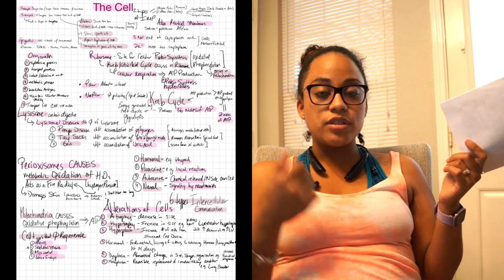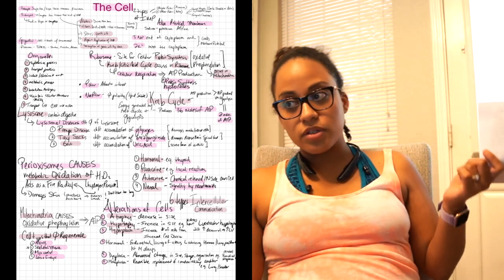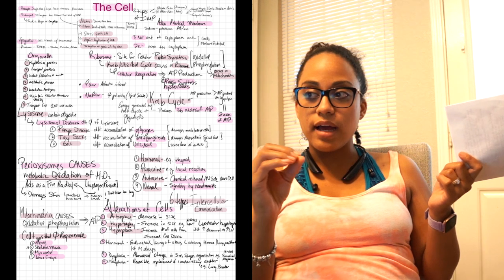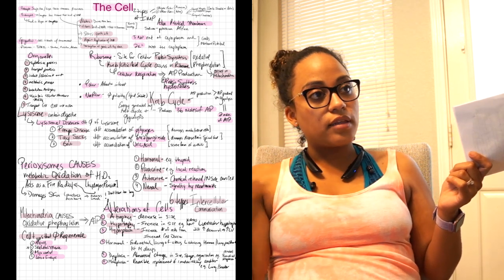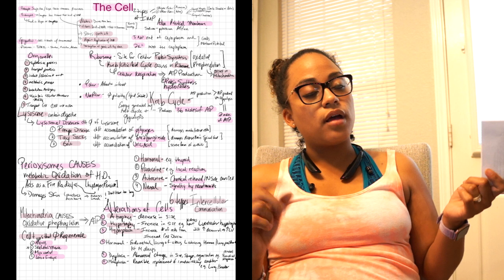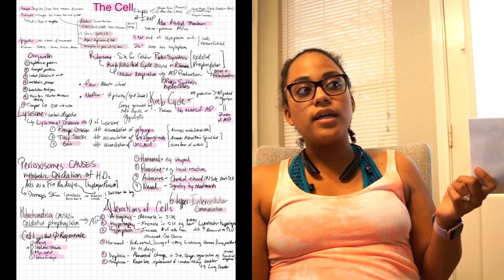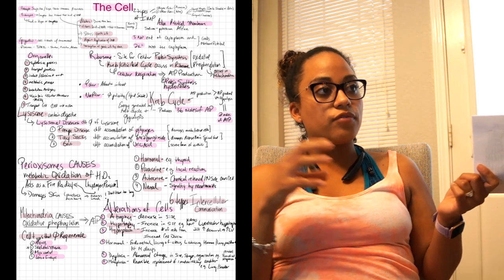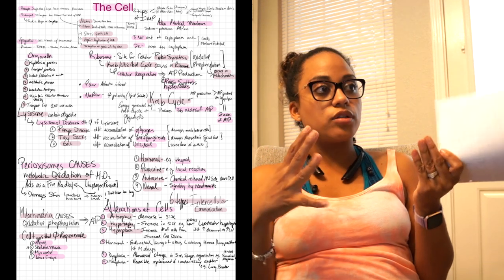So atrophy, I know it's a decrease in size. We always talk about muscle atrophy, so it's a decrease in size. Hypertrophy, we talk about like left ventricular hypertrophy when the heart is overworking itself and therefore its left ventricle grows. So left ventricular hypertrophy.